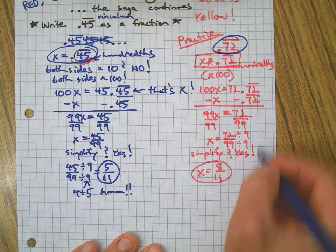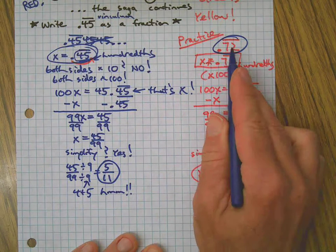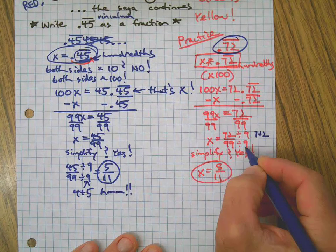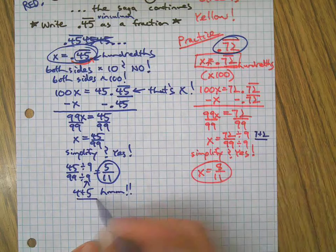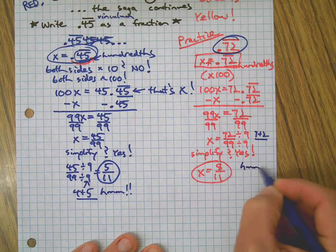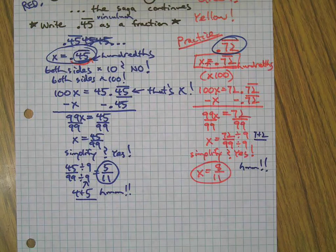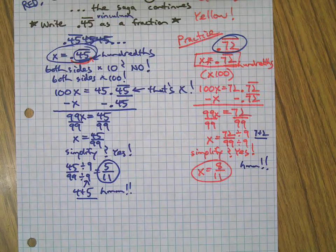Because over here, look: seven plus two, the two numbers contained in our repeating decimal, ended up being the factor that I used to simplify. Is this going to work every time? Is that how this works? I don't know. You figure that out. Let me know. Send me a message. Make your own video.